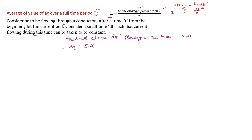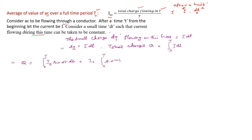We want to find the total charge flowing from zero to capital T, so we integrate. The limits are 0 to T. We know AC is represented as I = I₀ sin(ωt), so we replace I by I₀ sin(ωt). Since I₀ is constant for a given AC, it can be taken outside the integration, giving I₀ times the integral of sin(ωt) dt from 0 to T.